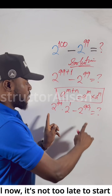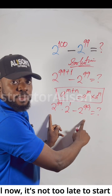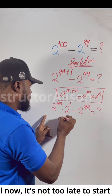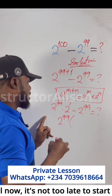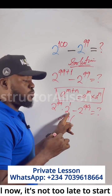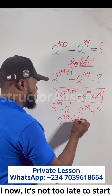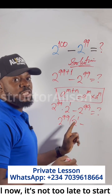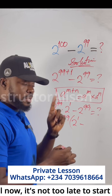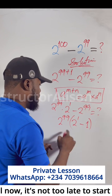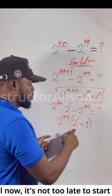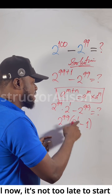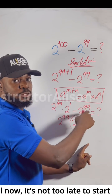What will be the solution to this? We can factorize 2 to the power of 99 because it is common to both terms. So, if I take 2 to the power of 99 out as a common factor, what will be left here will be 2 to the power of 1 minus 1. If you pull out this 2 to the power of 99, what's left is 1. After all, if you expand the bracket, 2 to the power of 99 multiplied by 2 to the power of 1 will give you the original expression, and 2 to the power of 99 times 1 will still give you 2 to the power of 99.